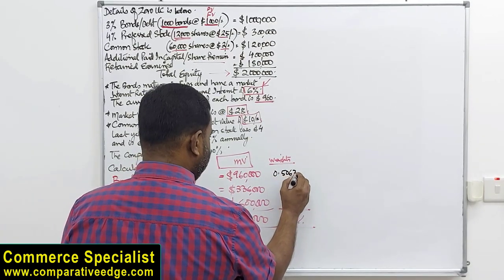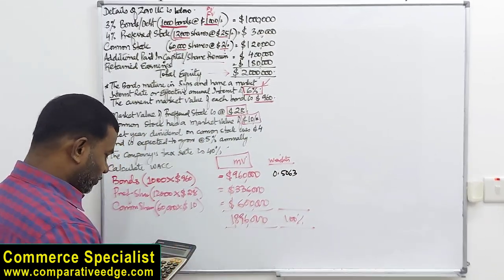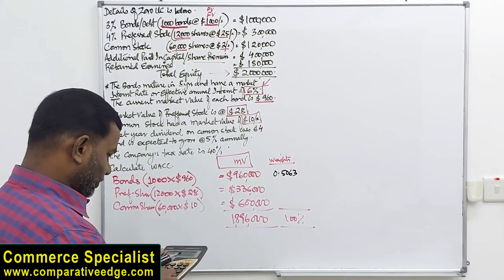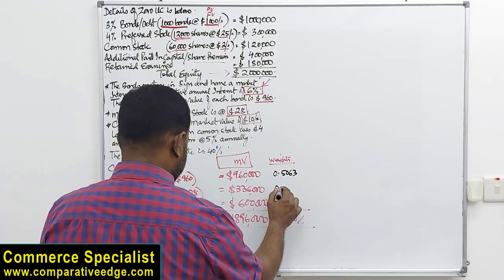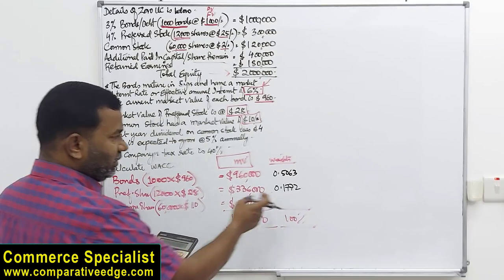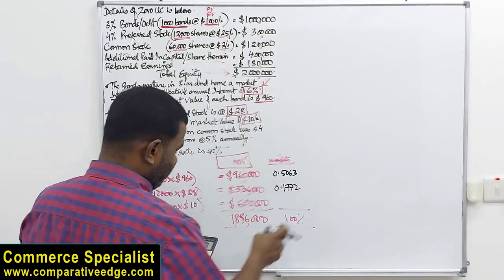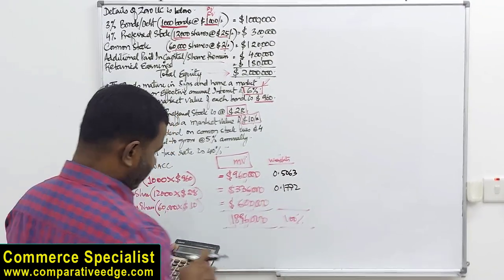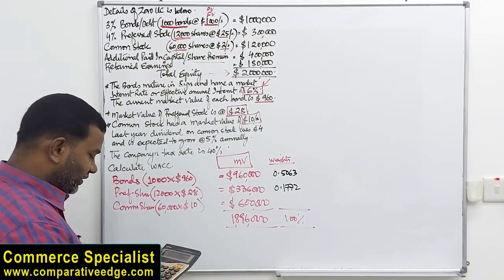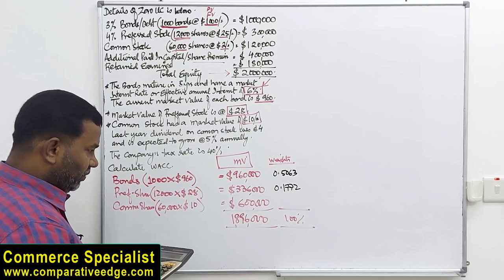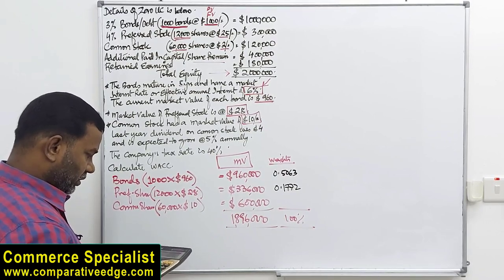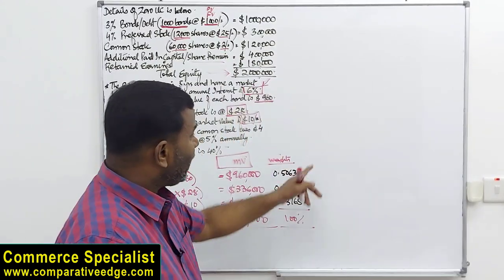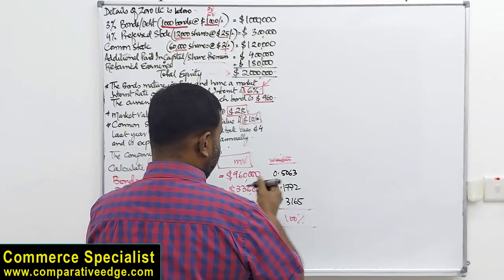Now we work out the weights. Bonds: $960,000 ÷ $1,896,000 = 0.5063 (approximately 50.63%). Preferred shares: $336,000 ÷ $1,896,000 = 0.1772 (approximately 17.72%). Common shares: $600,000 ÷ $1,896,000 = 0.3165 (approximately 31.65%). Now that we have the weights, we need the cost of each source.